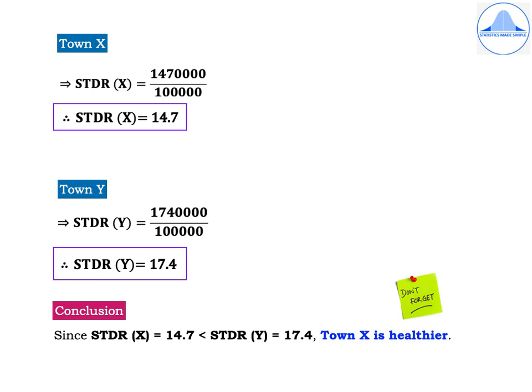For town X: STDR(X) = 14,70,000 ÷ 1,00,000 = 14.7. For town Y: STDR(Y) = 17,40,000 ÷ 1,00,000 = 17.4. Remember to round off to two decimal places for the final STDR value. Conclusion: since STDR(X) = 14.7 is less than STDR(Y) = 17.4, town X is healthier.